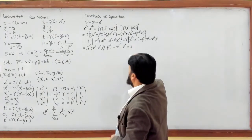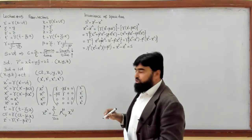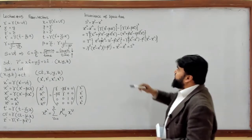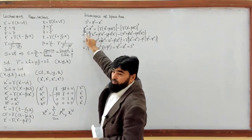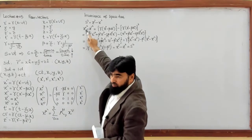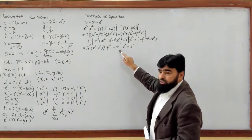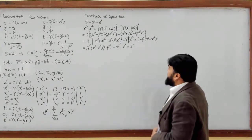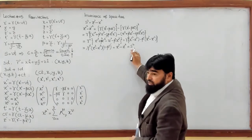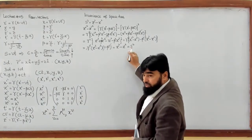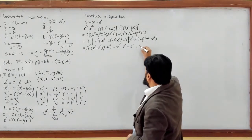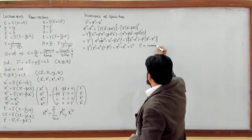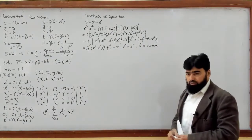And this is exactly s-squared as we defined. So we started from the moving frame in four-vector form and reached the stationary frame result — meaning s-squared is invariant under Lorentz transformation in four-vector space.